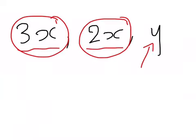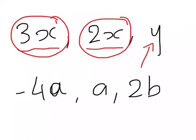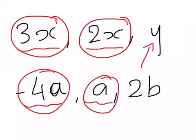Let's look at another one. Let's say we've got -4a, a, and 2b. Again, looking at the same variable and the same power, -4a has the same variable as a, so these two are like terms.